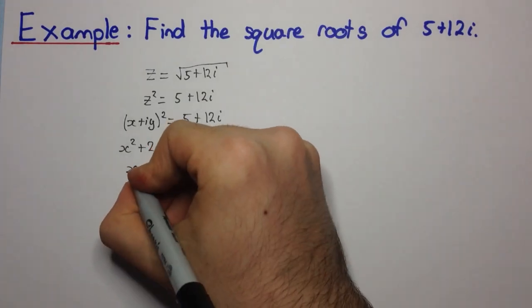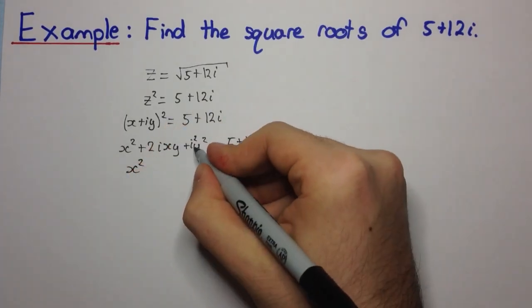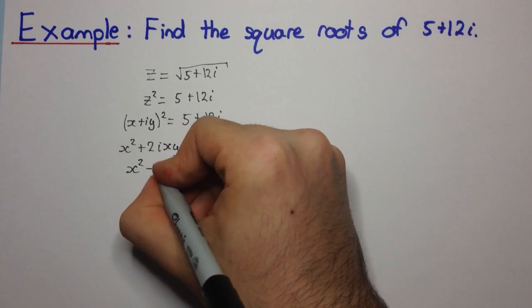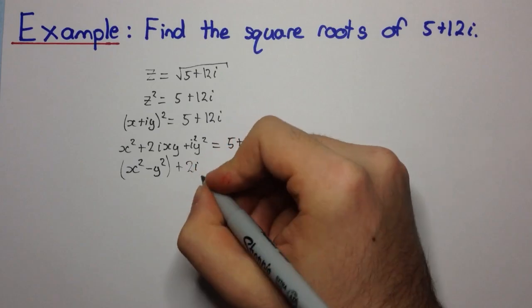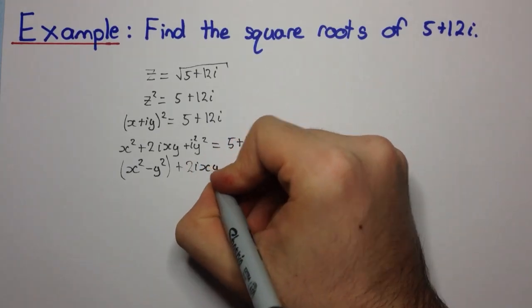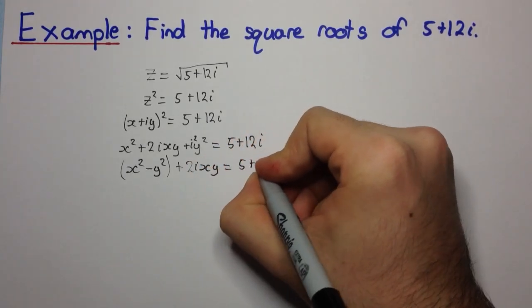And we're going to have x squared, this i squared is minus 1, so this here is a real number. So this is the real part here, and we're left with this as the imaginary part, 2i xy equals 5 plus 12i.